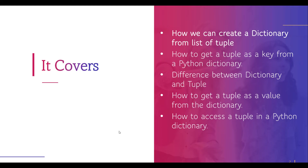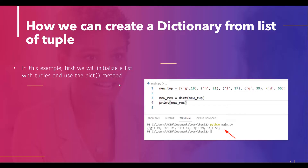So these are the topics we are going to cover. First, we will discuss how we can create a dictionary from a list of tuples. Then we will discuss how to get a tuple as a key from a Python dictionary. Next, we will see the difference between dictionary and tuple. After that, we will discuss how to get a tuple as a value from the dictionary, and finally how to access a tuple in a Python dictionary.